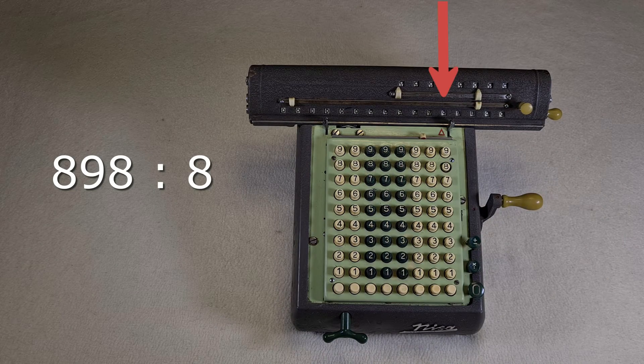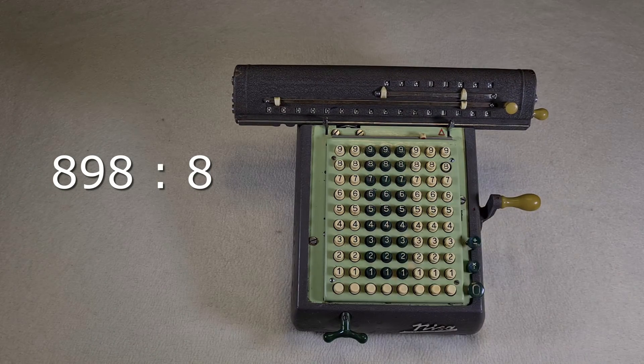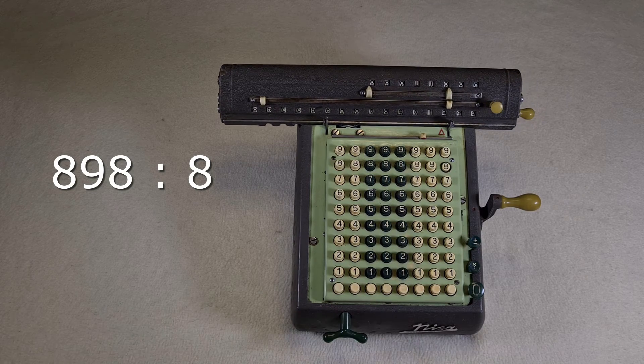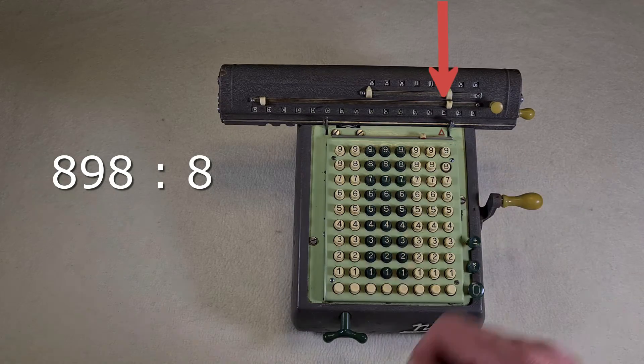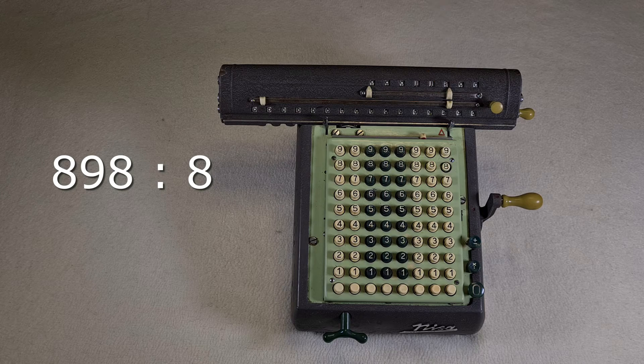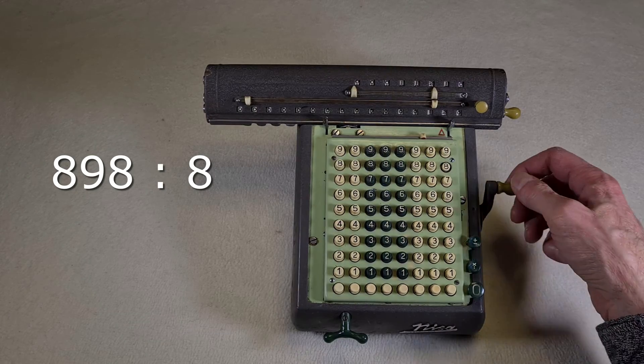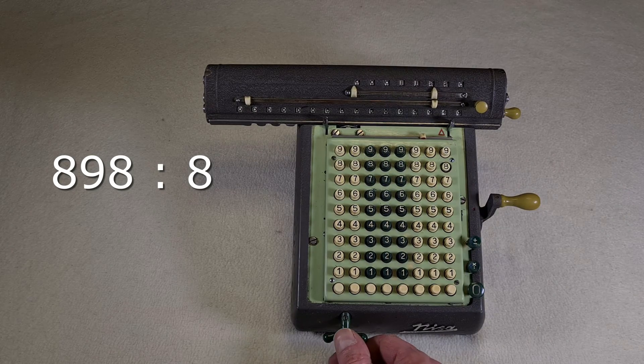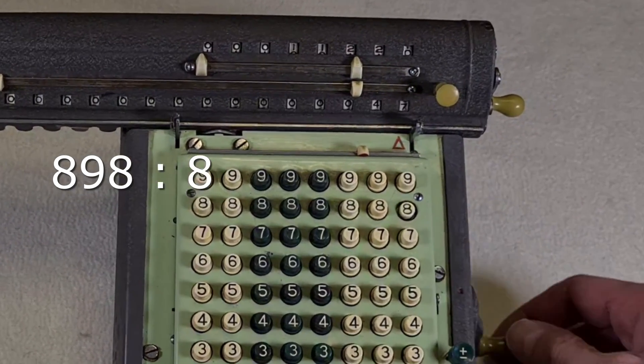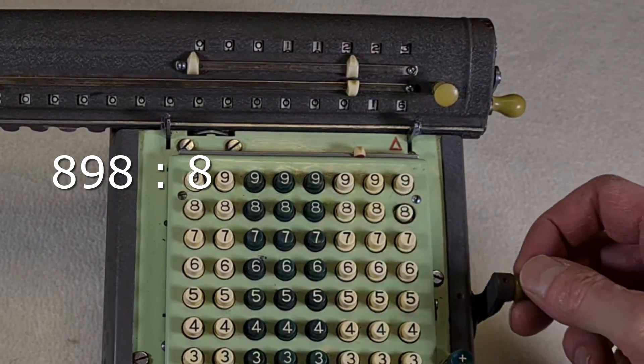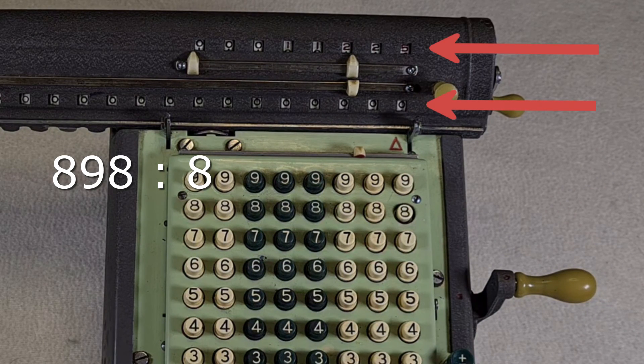So I move the carriage again. Now there is the 9 higher than 8 and I turn again. 1 is lower than 8 and I have to move the carriage again. I turn the crank backward. Now 2 is lower than 8 and I move the carriage of the calculator. I turn the crank until 4 is lower than 8 and I move the carriage of the calculator. Now I turn the crank. And there are all zeros here. The result is 112.25.